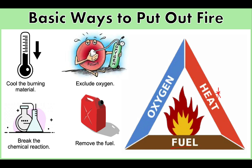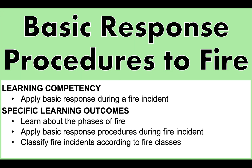The last part of the fire triangle is oxygen. Ambient air is made up of approximately 21% oxygen, and most fires require at least 16% oxygen content to burn. A fire ignited in an area with little oxygen will support only a small flame. If oxygen is suddenly and rapidly added to a nearly suffocated fire, the re-oxygenated air will quickly ignite, creating large and dangerous flames known as a flashover or backdraft. This will be further discussed in the next video on basic response procedures to fire.